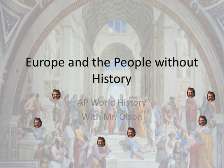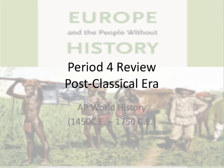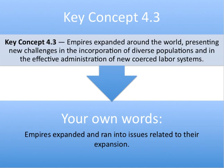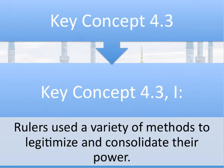Broadcasting live from the School of Athens, this is Europe and the People Without History, everyone's favorite AP World History Review Service. Today we're going to finalize our discussion of period four in the College Board's AP World History concept outline by talking about key concept 4.3, which says empires expanded around the world, presenting new challenges in the incorporation of diverse populations and in the effective administration of new coerced labor systems. Hopefully you wrote down something like: empires expanded and ran into issues related to their expansion. This seems to be a continuity in world history, so let's see how it happens in the early modern world.